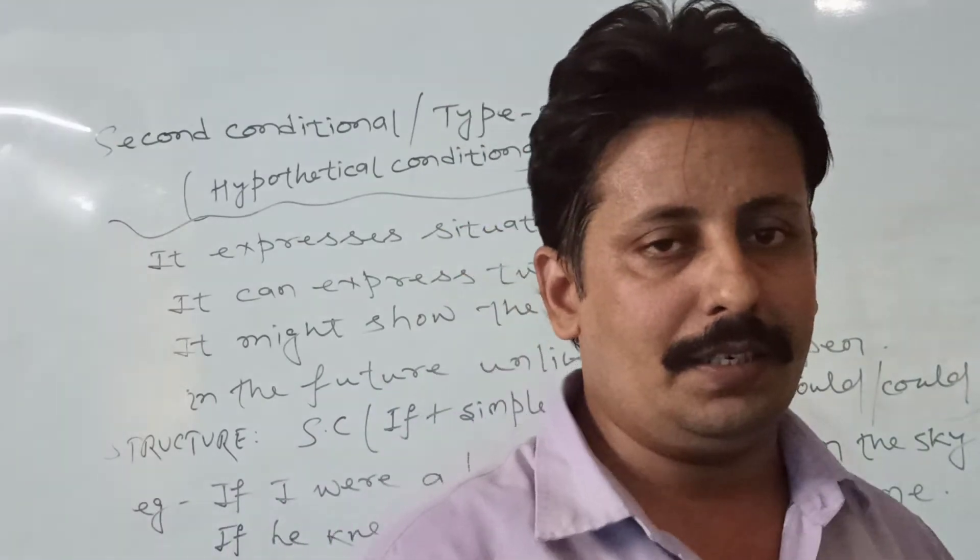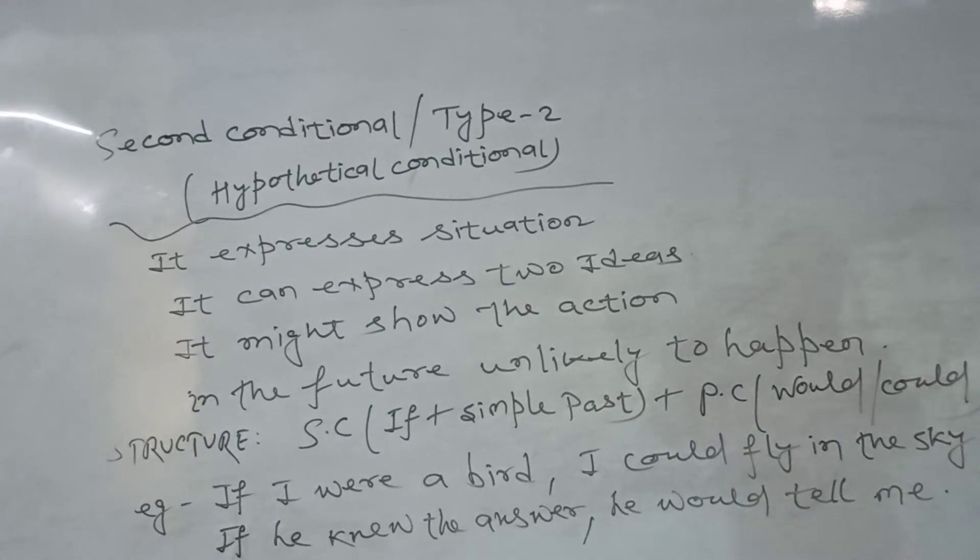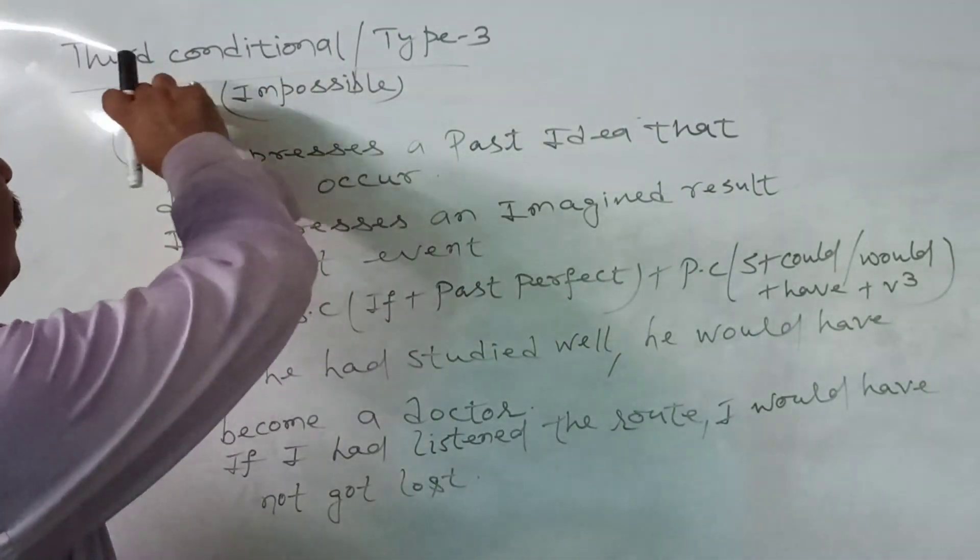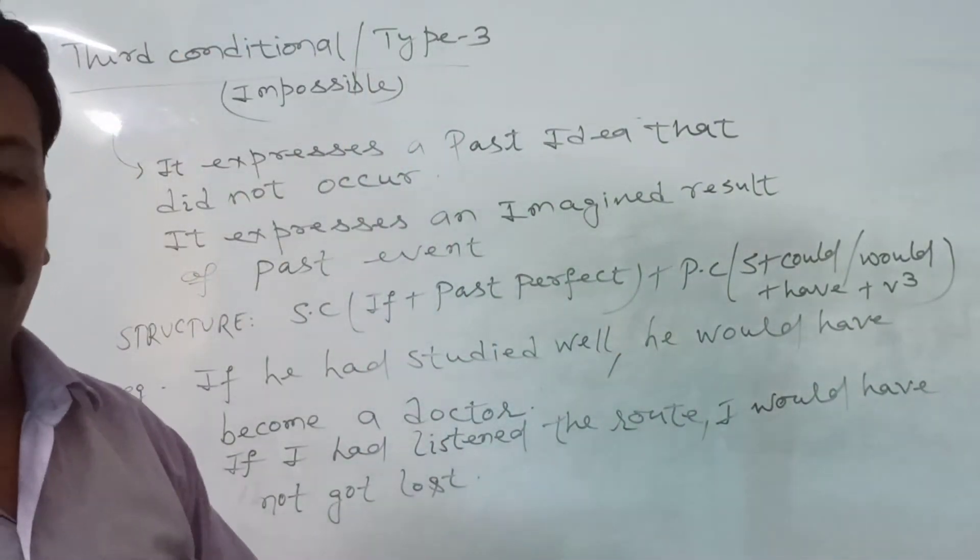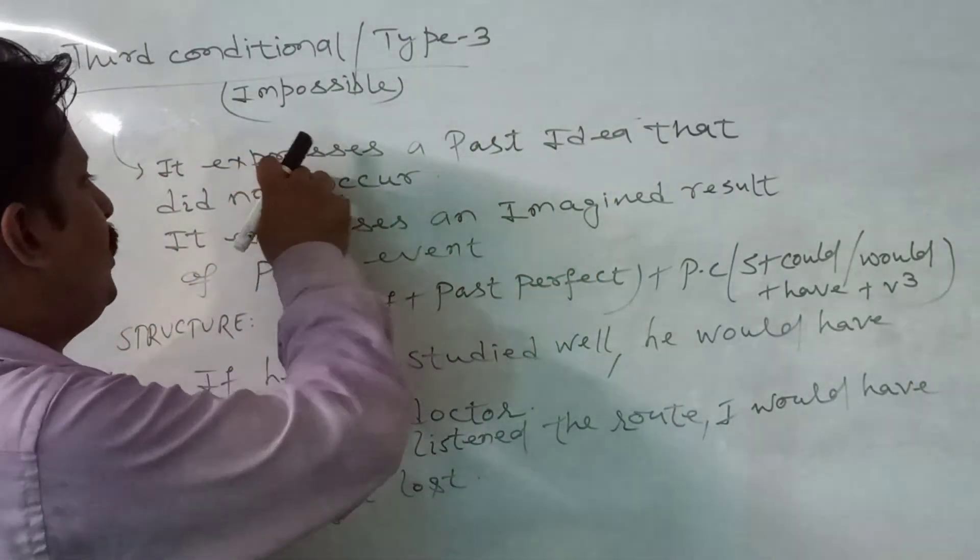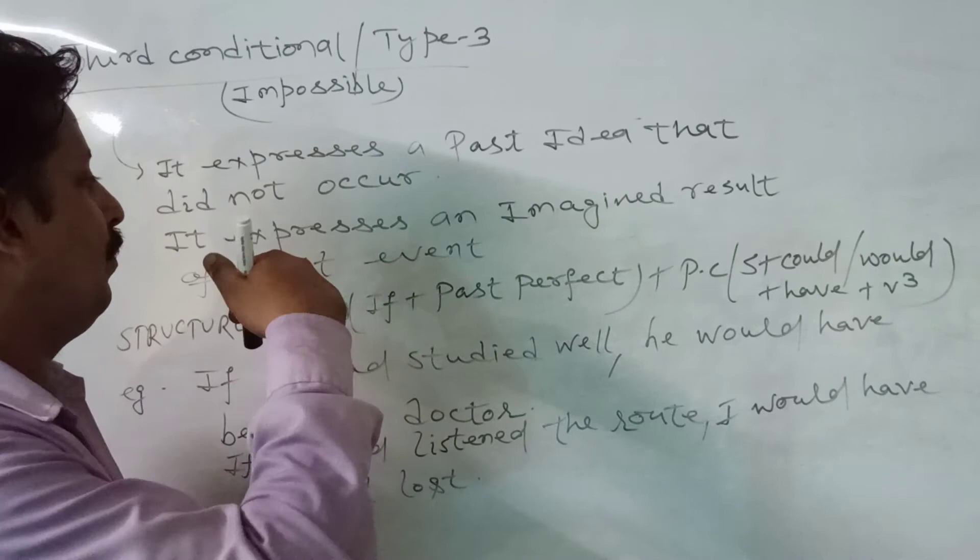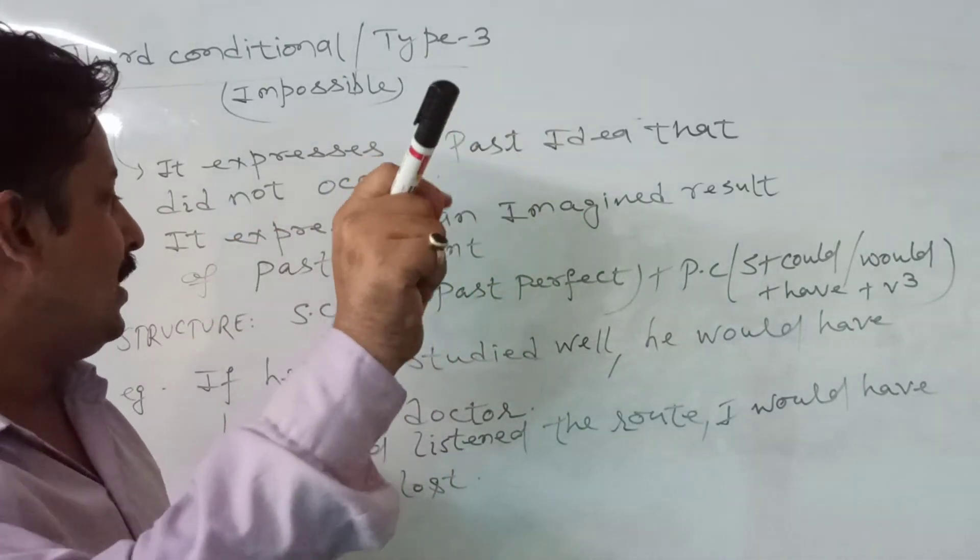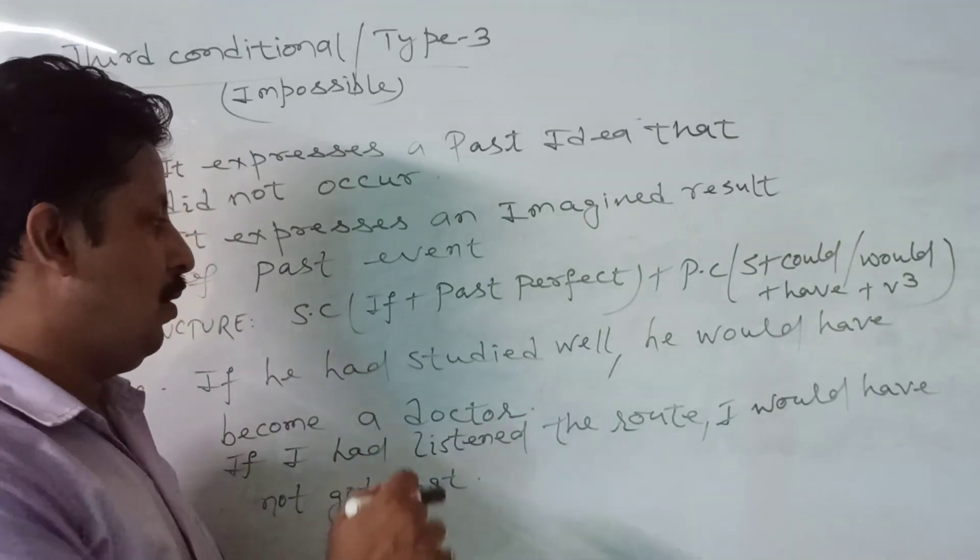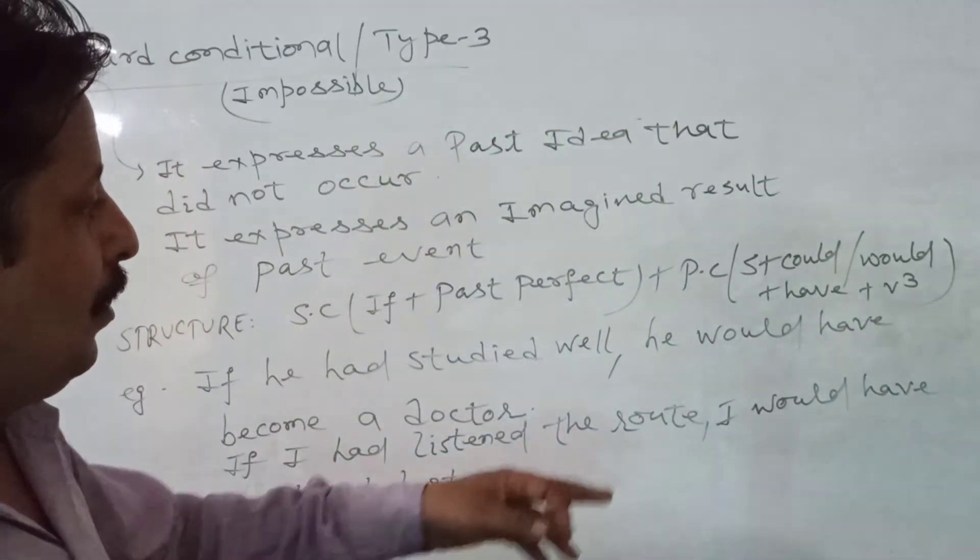The last, the fourth conditional is third conditional, that is known as type three or impossible condition. Here it expresses a past idea that did not occur. And now one more thing we can conclude: it expresses an imagined result of a past event. The structure you can see here - in subordinate clause the sentence will be in the form of past perfect, and in principal clause it will be subject plus would, could, should plus have plus past participle.